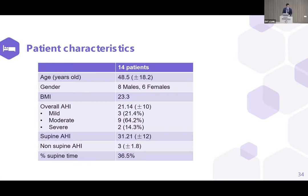We recruited a total of 14 patients with an average age of 48.5, comprising eight males and six female patients. The average BMI was 21.14. Most patients are in the mild and moderate OSA category, with only two in the severe category. The average supine AHI was 31.1, non-supine AHI was 3, and percentage of supine time at baseline was 36.5%. We initially recruited 40 patients; however, four dropped out for various reasons.